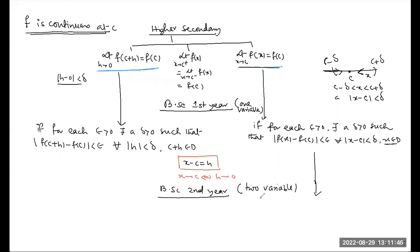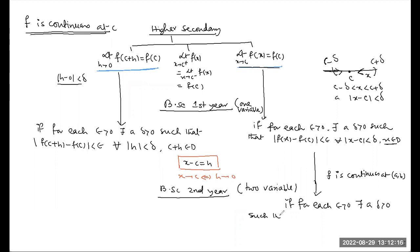For BSc second year, the function is continuous at point (A, B). Where previously we had a single variable c, now we have two points A and B. The definition is: for each positive epsilon, there exists a positive delta such that — now instead of x minus c distance, with two variables we draw the distance between (x,y) and (A,B) less than delta.